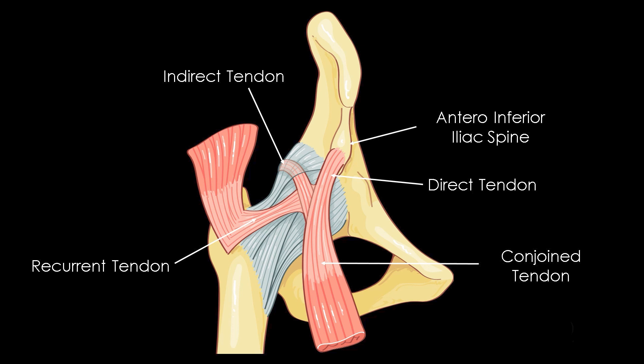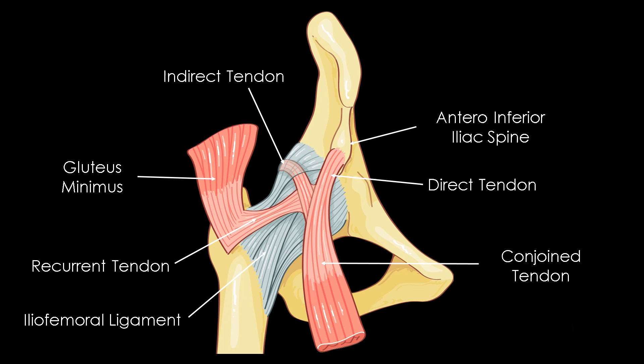The recurrent tendon, which is inconsistent, has its origin at the capsule with the iliofemoral ligament. Described as a fibrous expansion, it merges with the deep fascia of the gluteus minimus. It is rarely seen at ultrasound.